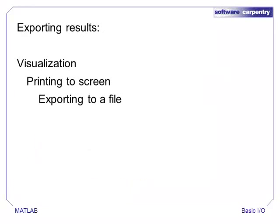The other half of file I/O is retrieving results from MATLAB. There are multiple ways to save data. We can save a plot or image of our data. We can save printed output, such as a series of commands and their results, or we can export variables to a file.